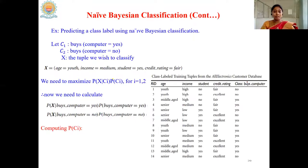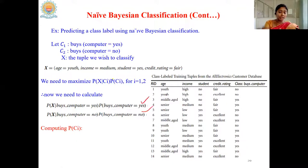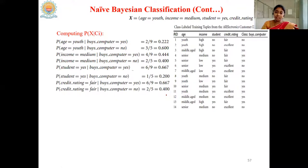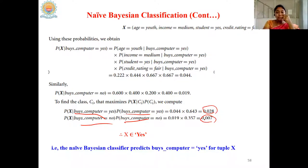The same thing we experimented with in an example using the previous table from the last class. We took a tuple X with two classes. We need to calculate the values for both classes. We completed P(Ci) in the last class and also looked at computing P(X|Ci). Finally, after getting the individual values, we got the total computed values: 0.028 for the 'yes' class and 0.007 for the 'no' class. So we concluded that X belongs to the class 'yes'.